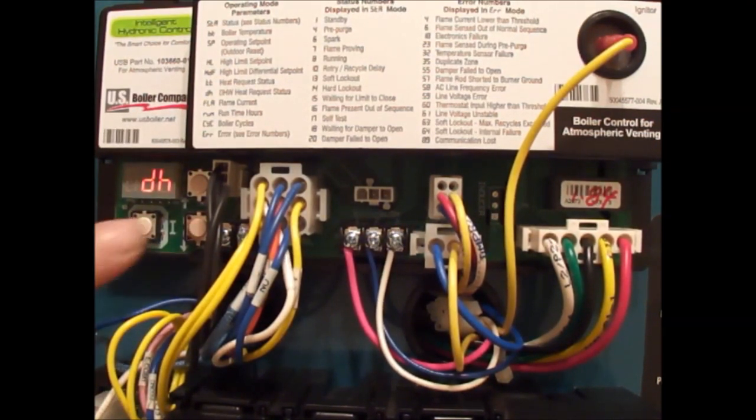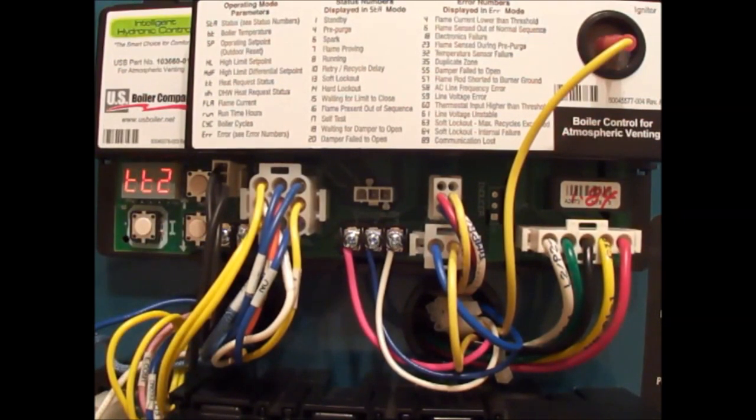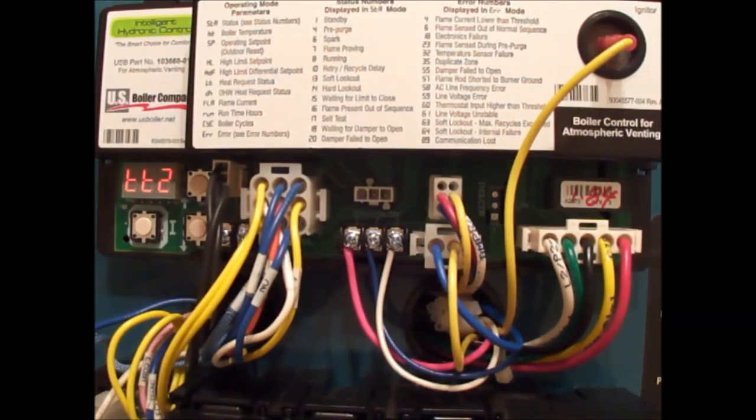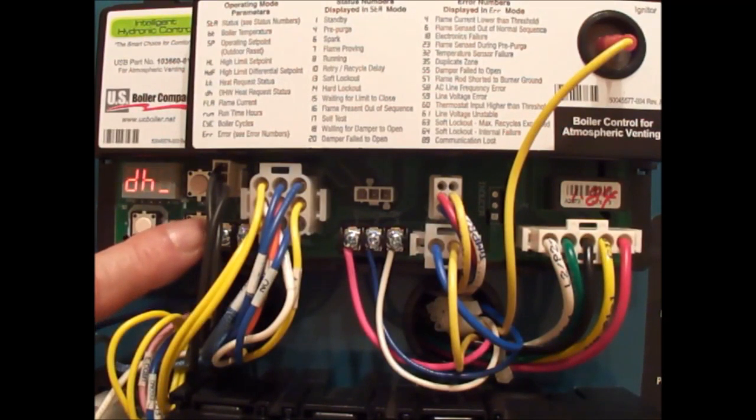Domestic hot water, we can change that to domestic hot water or TT2. TT2 is your second zone of heat. This control can do two inputs. It can be two heat zones, one heat zone one domestic hot water. We can change domestic hot water to TT2 and that makes it a heat zone again that ignores priority. If we leave it in DH, then it would not ignore priority and it would shut down the heating pump.